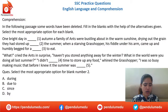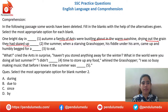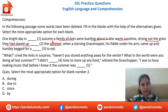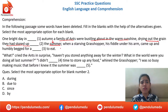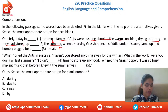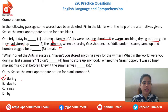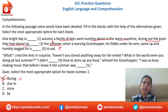Next blank: 'In late autumn, a family of ants were bustling about in the warm sunshine, drying out the grain they had stored up ___ the summer.' Options: due to, since, during, bye. The ants were drying grain they had stored throughout the summer season — so the answer is 'during the summer.' Very good, Ashish and Suraj — 'during' is absolutely correct.